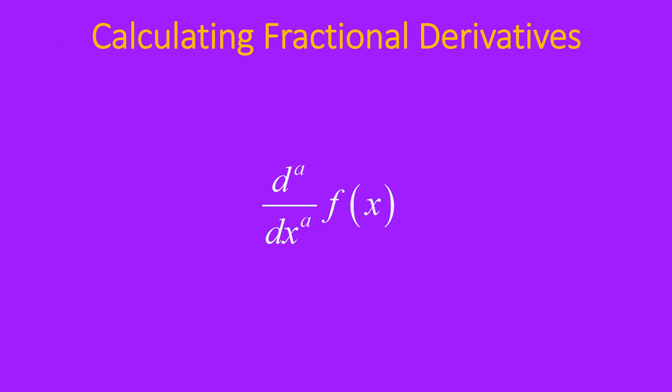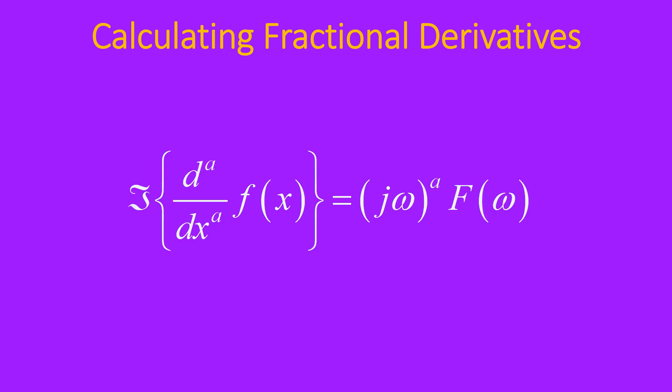How on earth could we calculate these? Well, let's start with the definition of a derivative. What if we Fourier transform that? Well, remember there's a property of a Fourier transform. The Fourier transform of the derivative of a function is the Fourier transform of the function multiplied by j times omega multiplied by the order a, and already it's becoming apparent that we don't really have to have a be an integer. That can be any number.